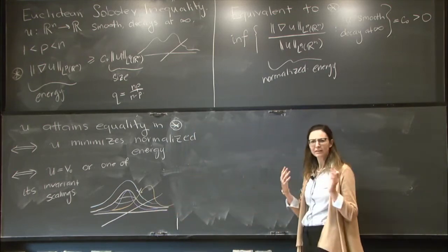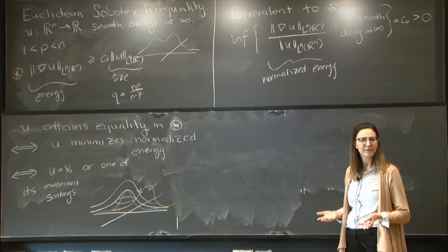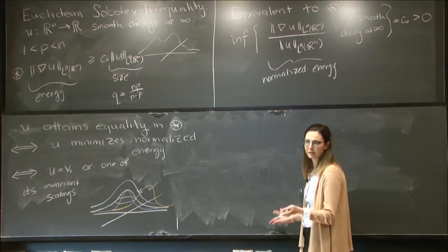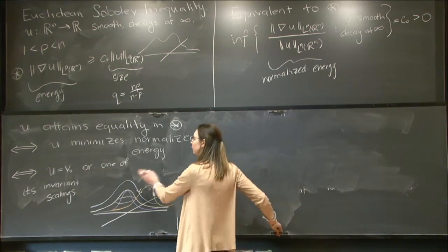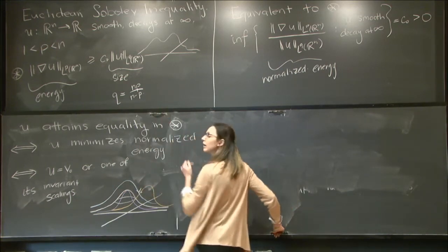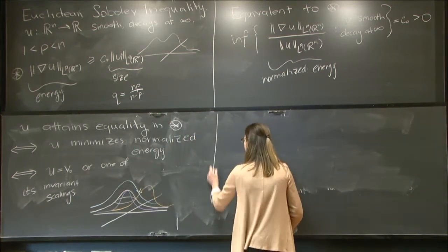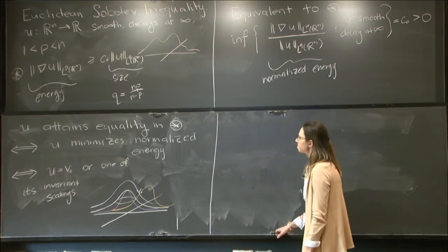Aubin was studying this with a very particular application in mind. And this was to the Yamabe problem in conformal geometry, where determining what the extremal functions are and this sharp constant play a vital role there.